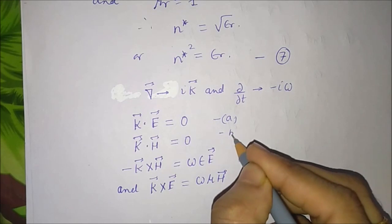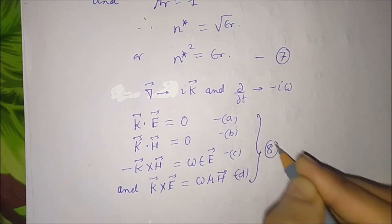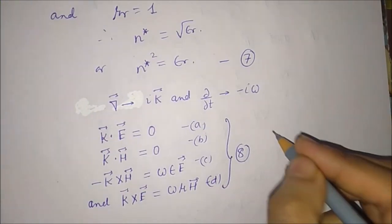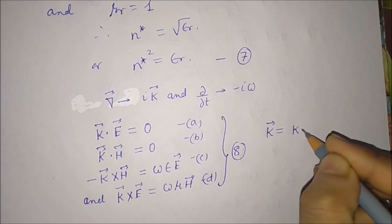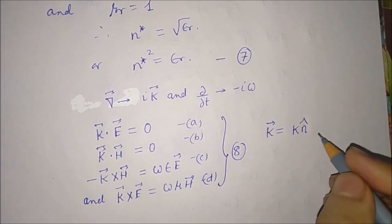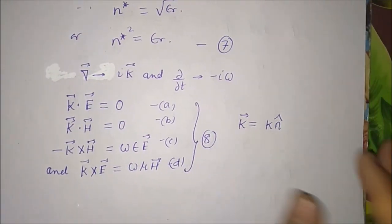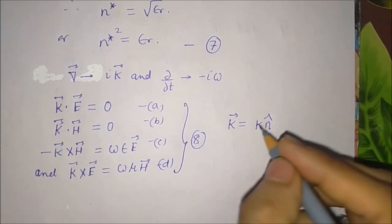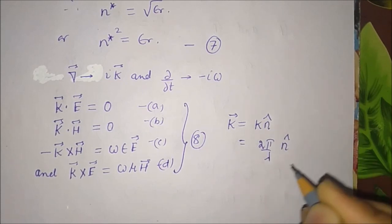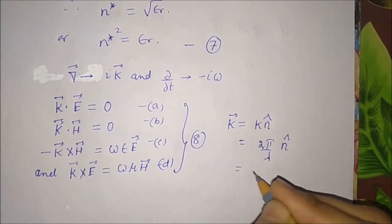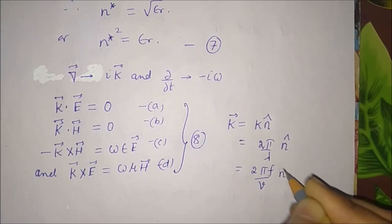These are equations a, b, c, d, collectively equation number 8. Here k is the wave propagation vector equal to k n̂ in the direction of propagation of the wave, equal to 2 pi f / v times n̂.